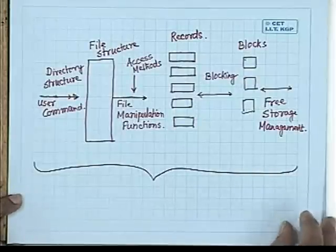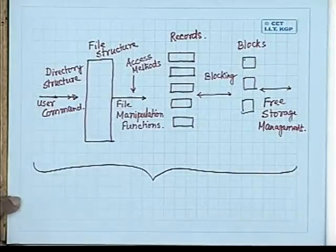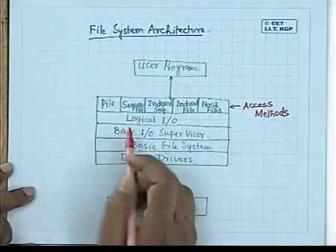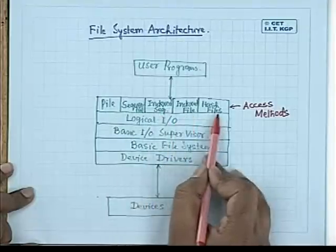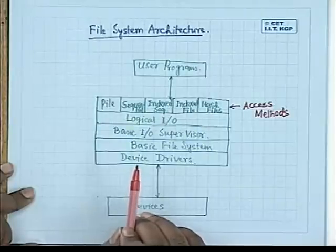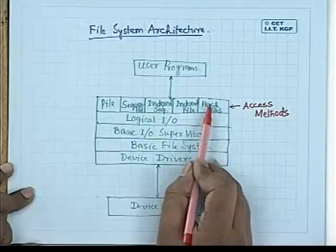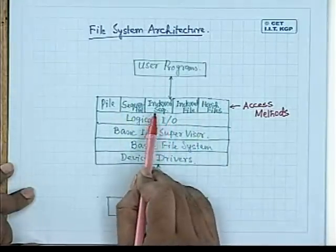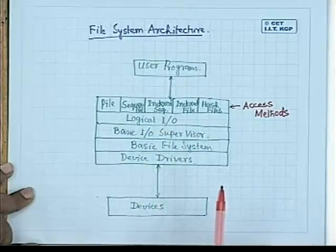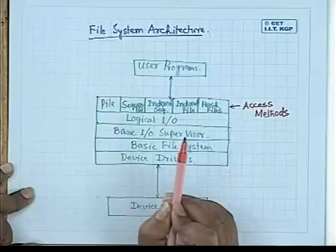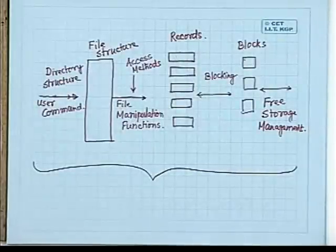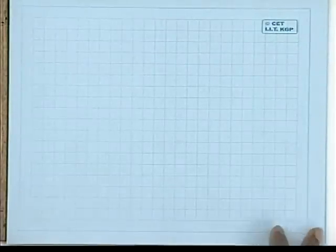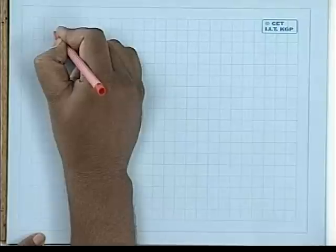Coming to different file structures: one type is a pile, there is a sequential file, an indexed sequential file, a simple index file, and a hash file. For different types of applications, different file structures are suitable. It is not that only one file structure will be suitable for every application — which kind of file structure to use depends on the application.